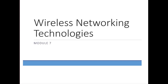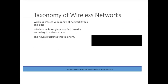The previous presentation covered wired technologies. Now we will look at several types of wireless technologies and discuss some of the numerous advantages and types of wireless technologies available. Another way to categorize wireless networks is by the range of areas covered. Wireless technologies can be classified broadly according to a network type or categorized with a taxonomy, depending on the range the wireless signal extends.